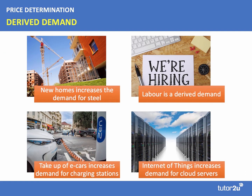Our second type of demand is derived demand. Derived demand is typically when the demand for a factor of production, a factor of input, is linked to the demand for the goods and services to which that input will be put. Take, for example, steel — the demand for steel is strongly linked to the number of new buildings and new homes being built. It's also linked to the market demand for cars and light vehicles.